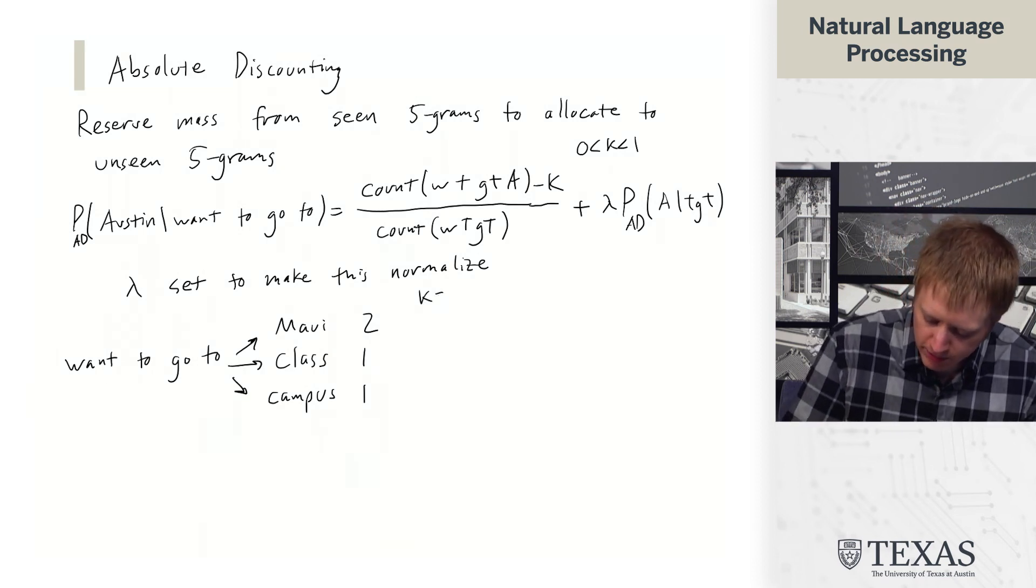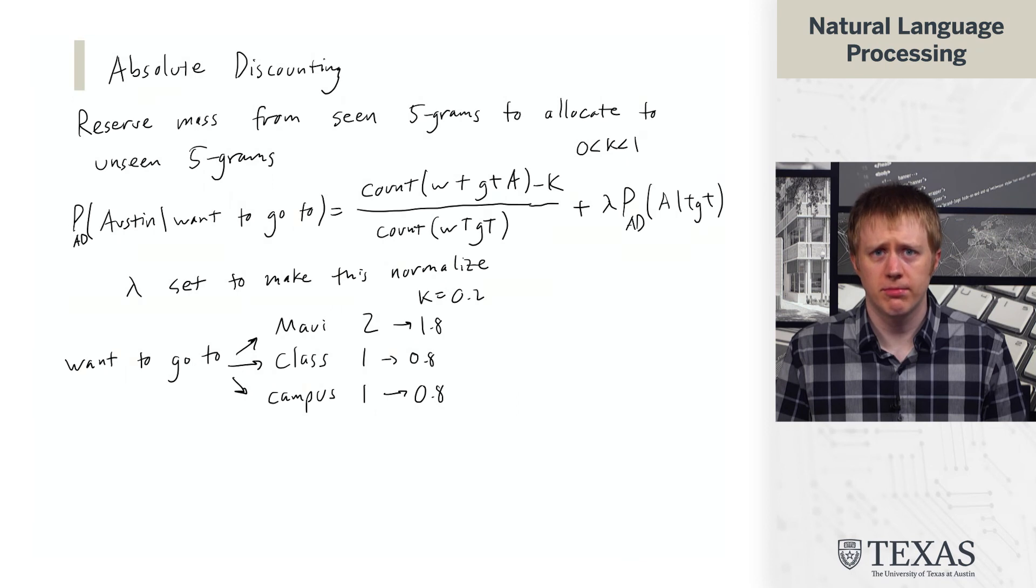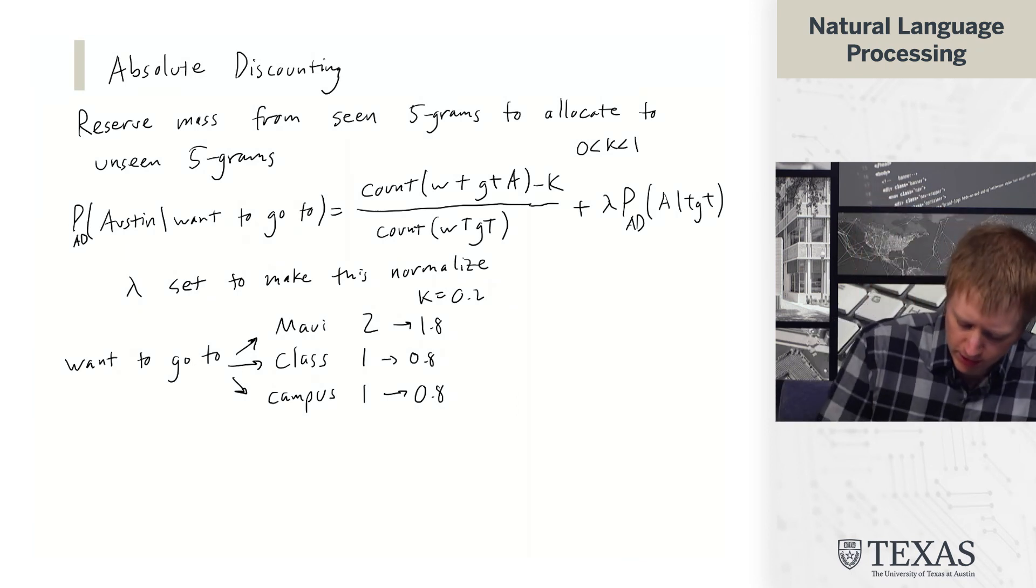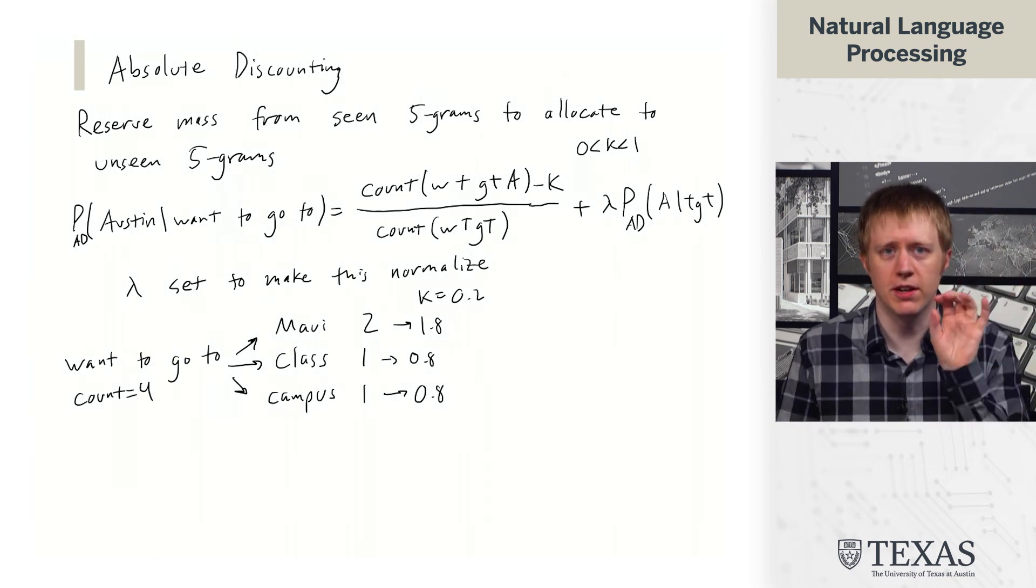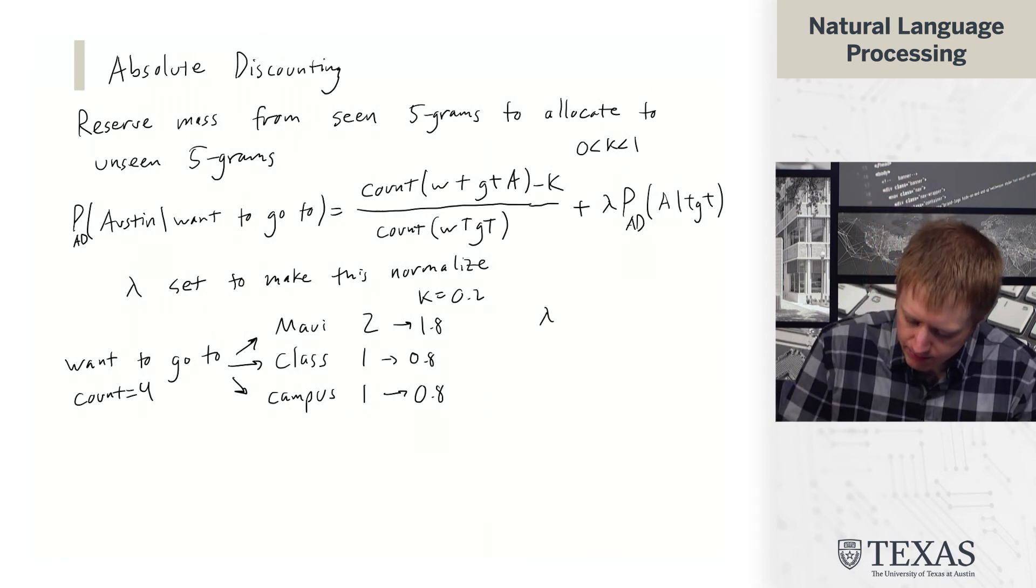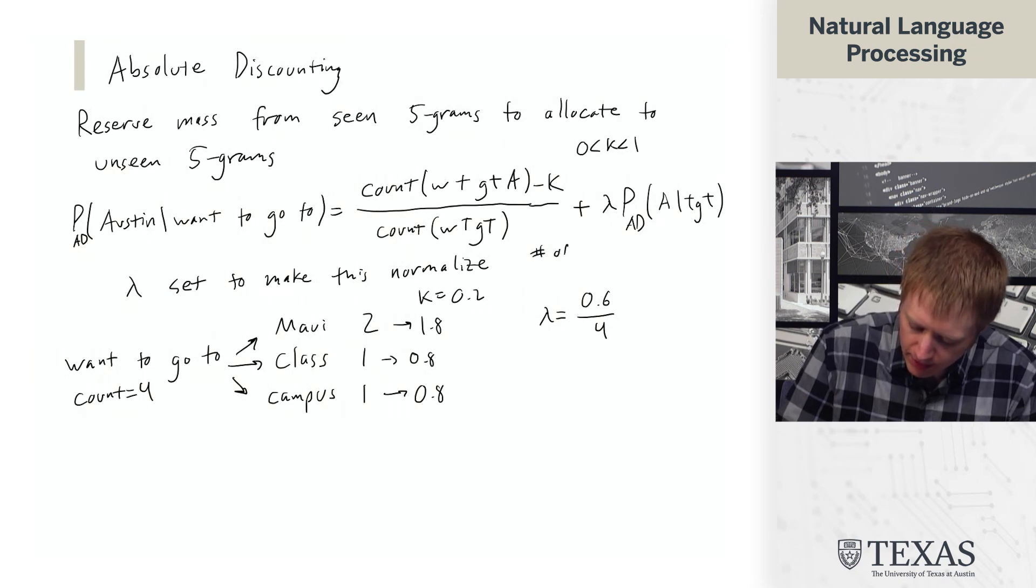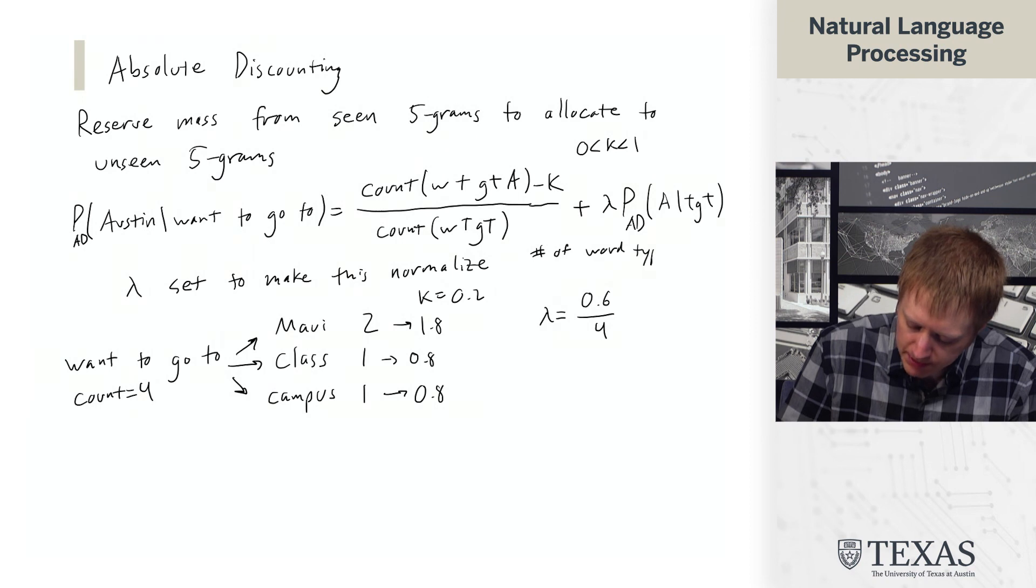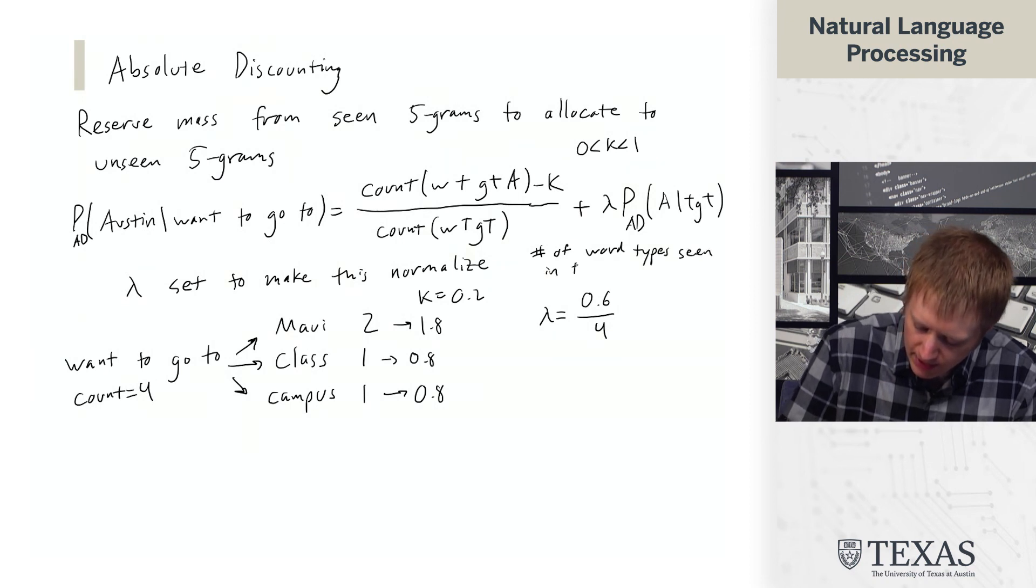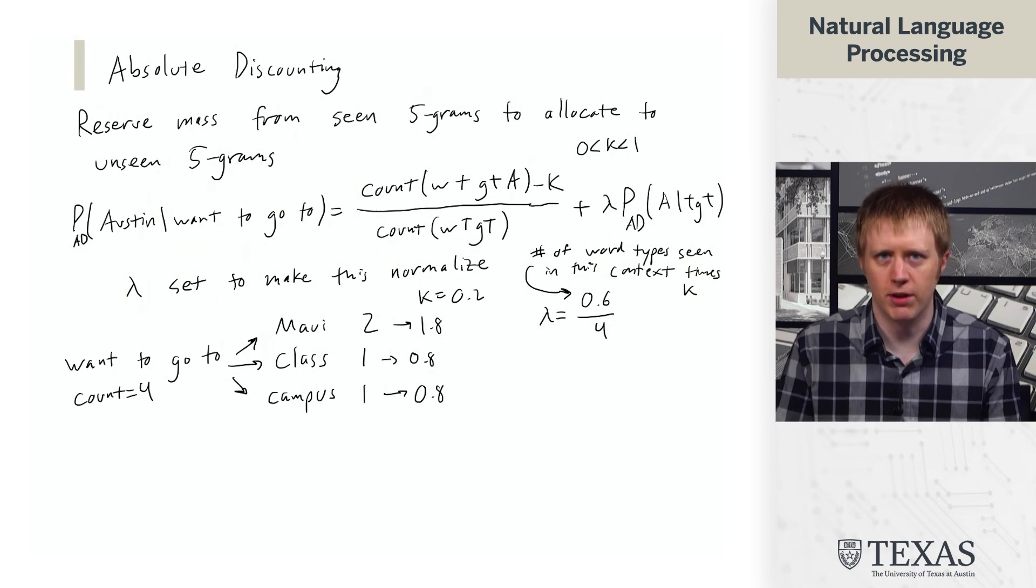So what we do is if k equals 0.2, then we are essentially think of it as subtracting off from each of these counts. And so our kind of denominator here, the count of want to go to is four, right? We've seen it four times with these three unique contexts. And so lambda here ends up being 0.6 over 4. It's the number of word types seen in this context times k. That's what the numerator here is. And the denominator is just the count of want to go to.